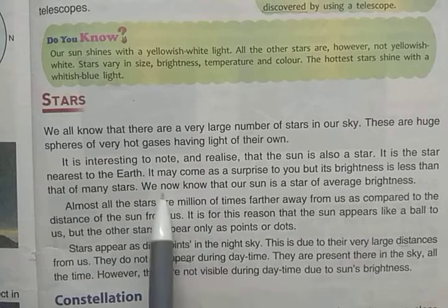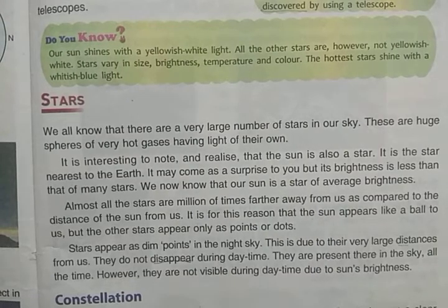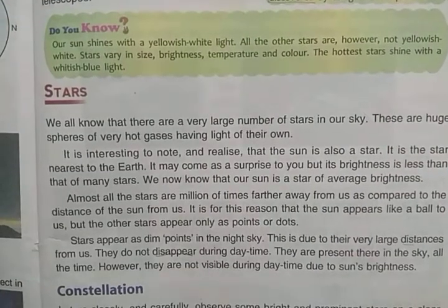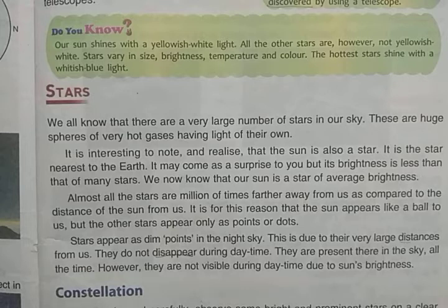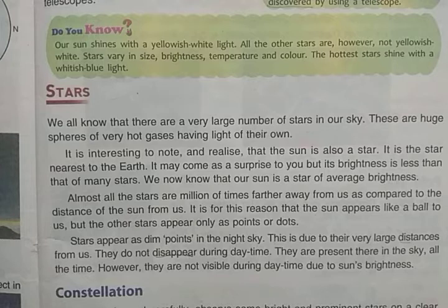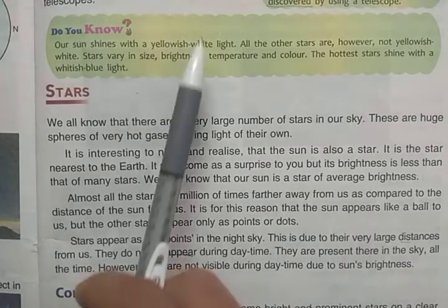Our Sun is a star of average brightness — there are stars that are hotter and brighter, and stars that are less bright. We have also learned that our Sun shines with a yellowish-white light.